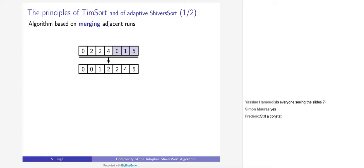TimSort is based on merging adjacent runs in an array. For example, one run [0, 2, 2, 4] and the next run [0, 1, 5] are merged to give [0, 0, 1, 2, 2, 4, 5] — I had two runs and now I have one.